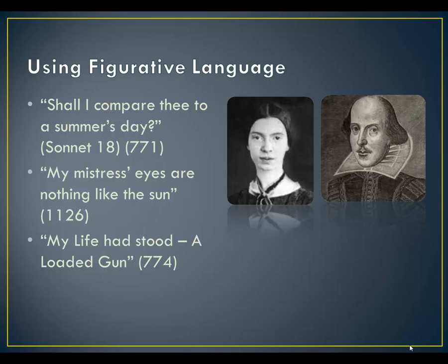Think about how it makes sense that a life could be like a loaded gun. On page 1126, Shakespeare is making fun of a Petrarchan conceit called the blazon. Before Shakespeare started writing sonnets, the person who really invented the sonnet is Petrarch, and he wrote all of these sonnets for Laura in a sequence of poems called Rime Sparse.